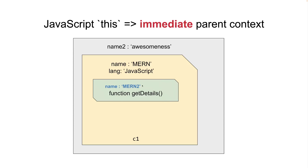We can access this name, right? What if we want to access the parent's name? So to do that, what we need to do, we have to use the word 'this'. So, 'this' is the parent context. So, this dot name is the name — we should be able to access this name.